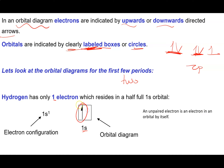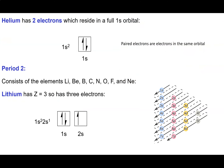Hydrogen has one unpaired electron — an electron in an orbital by itself. Helium has atomic number 2, so its configuration is 1s². The second electron goes into the same orbital spin down. Helium has two paired electrons — electrons that share the same orbital. That completes period one.